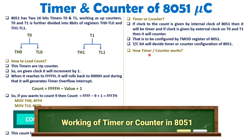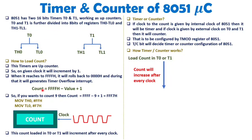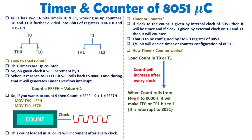Let us understand how timer and counter work in full. First, we load the value of count into T0 or T1 using the formula: maximum value minus the desired count plus 1. With respect to the clock, the count increases one by one. When it reaches FFFF and rolls back to 0000, it generates a timer overflow flag — TF0 or TF1 is set to 1 — indicating a timer interrupt.